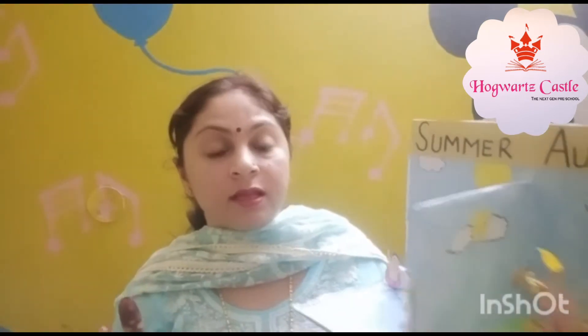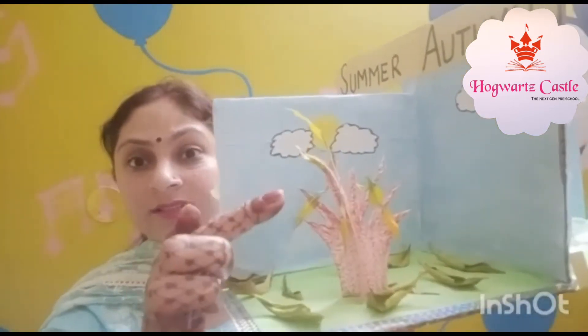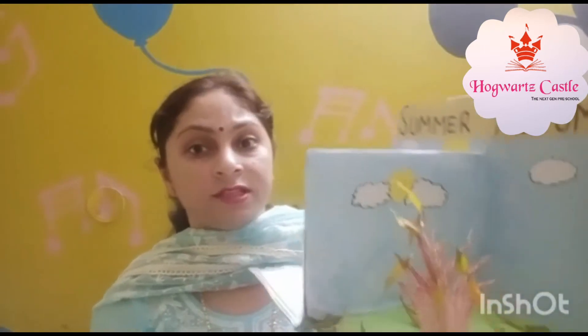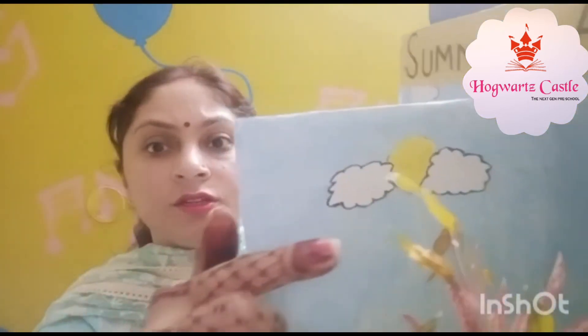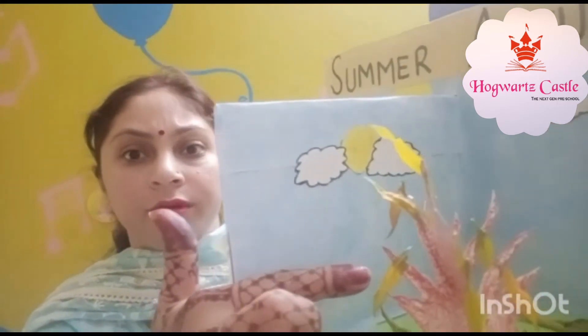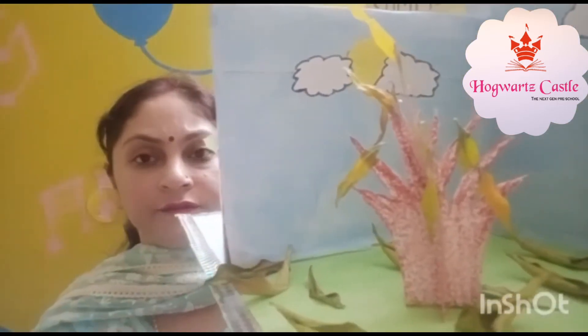In autumn season the weather changes a little, and we start wearing full-sleeve t-shirts and jeans. The weather becomes dry and trees start shedding their leaves. Leaves are green in color, but in the autumn season leaves turn dry, yellow, and brown in color, and the trees shed their leaves.